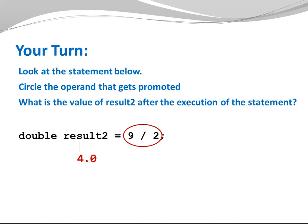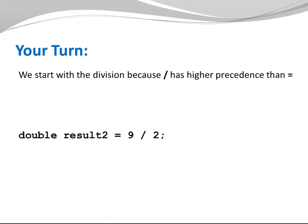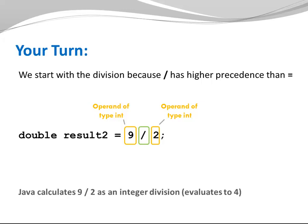The operand that gets promoted is the right hand operand of the assignment operator. And the resulting value of my variable result2 is 4.0. We start with the division because division has higher precedence than assignment. My division has two operands. Both of them are type integer, which is fantastic. That's what Java needs. So with two integers, Java is going to use integer division. Integer division truncates. So 9 divided by 2 is 4.